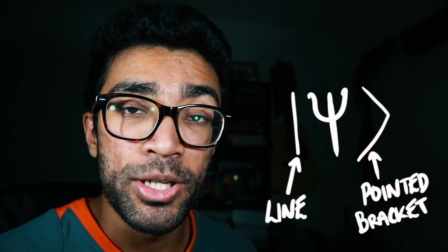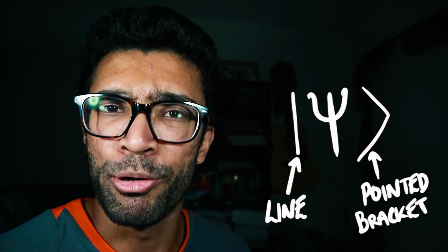Don't worry — by the end of this video, you'll have at least a basic understanding of what each one of these symbols represents and what the Schrödinger equation is trying to tell us. So let's start with this symbol here. The bit in the middle is the Greek letter psi. The line and the pointed bracket — or pointed parenthesis if you're from across the pond — is put around the psi to let us know that we're looking at a quantum state.